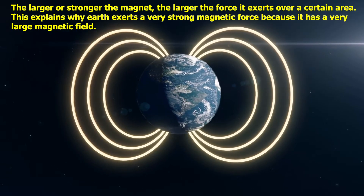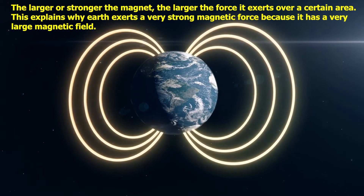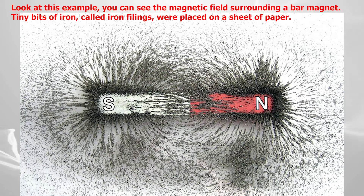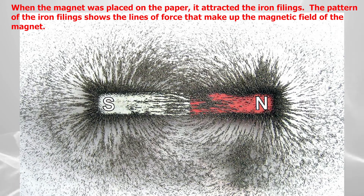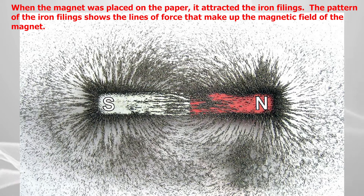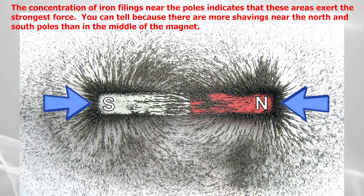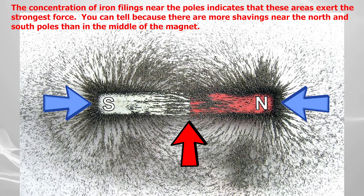This explains why Earth exerts a very strong magnetic force — because it has a very large magnetic field. You can see the magnetic field surrounding a bar magnet: tiny bits of iron called iron filings were placed on a sheet of paper, and when the magnet was placed on the paper, it attracted the iron filings. The patterns of the iron filings show the lines of force that make up the magnetic field. The concentration of iron filings near the poles indicates that these areas exert the strongest force — there are more shavings near the north and south poles than in the middle of the magnet.